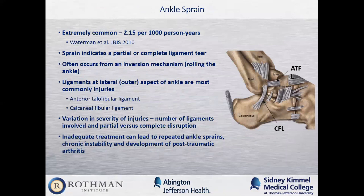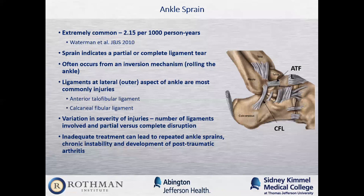Ankle sprains are one of the most commonly treated orthopedic conditions overall. A sprain involves an injury to a ligament, at least a partial or sometimes a complete ligament tear. An ankle sprain most commonly occurs from an inversion mechanism — rolling the ankle inwards — and as a result, the ligaments on the outside of the ankle are torn most commonly. This is the anterior talofibular ligament, followed by the calcaneofibular ligament. There's a wide variation in the severity of injuries, including the number of ligaments involved and partial versus complete disruption.